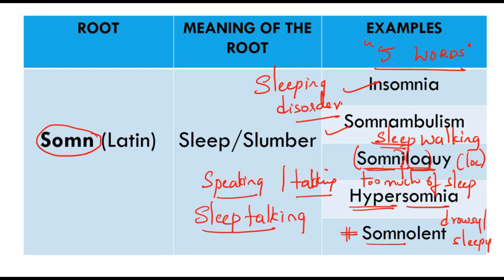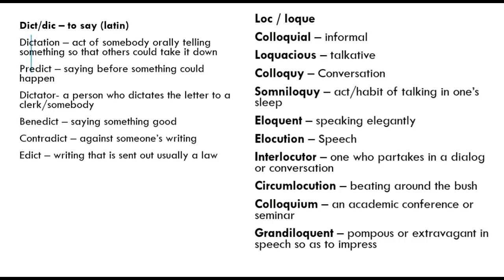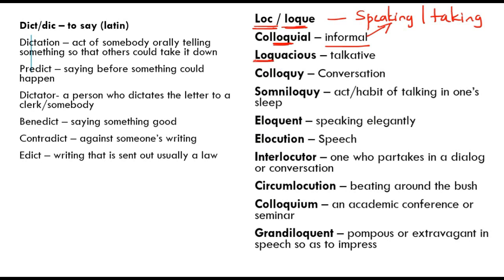As we opened a window for 'loq', let's now learn the root 'loc/loq'. It can be spelled L-O-C or L-O-Q. The first word is 'colloquial' — you can see L-O-Q, so it has something to do with speaking or talking. 'Colloquial' means informal language — the language we use casually to speak. 'Loquacious' is a very important word appearing in many competitive examinations. It means a very talkative person — speaking is like your part-time job.